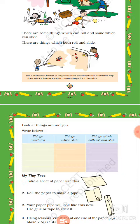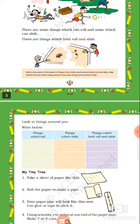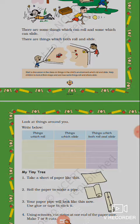I can give some examples of things that can both roll and slide. A tumbler — if a tumbler is in a standing position it can slide, but when it is in a lying position it can roll. There is an abacus tool; the abacus tool can slide easily on the ground or on the floor, and its beads can roll. So think about such things and write in your notebook.